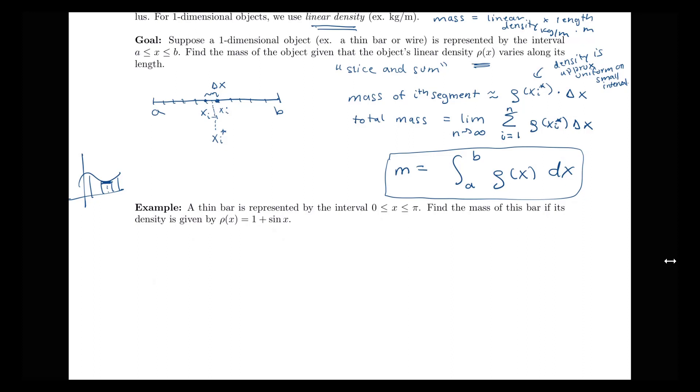In our example, we're told that we have a thin bar that's represented by the interval where x is ranging from zero to π. So I'll draw my object here, which goes from zero to π. We want to find the mass of this bar if its density is given by the function ρ(x) = 1 + sin(x).